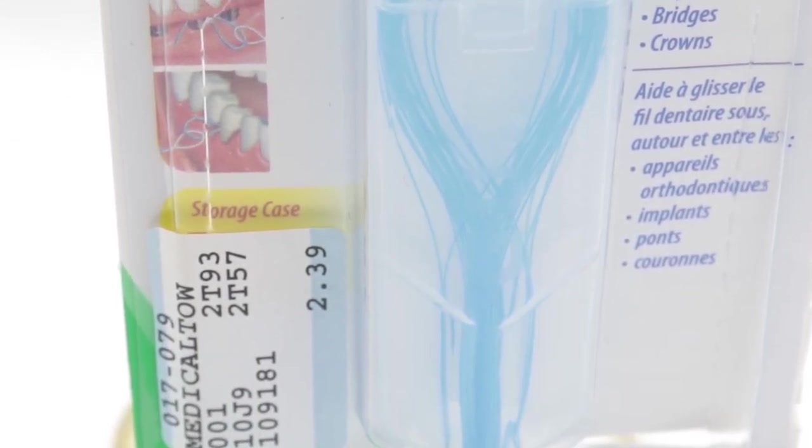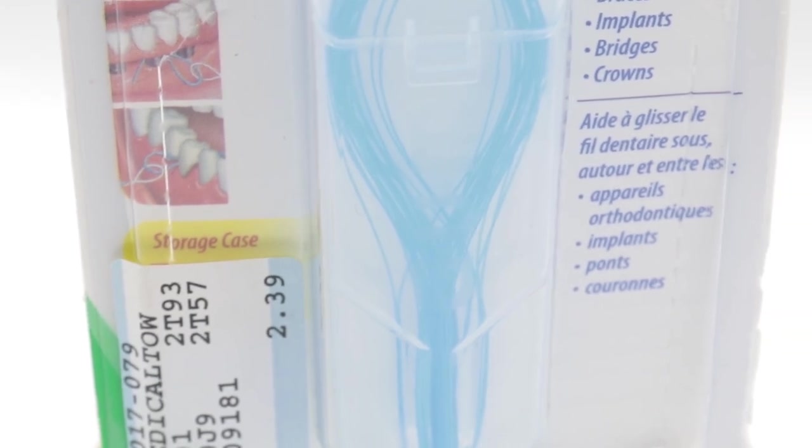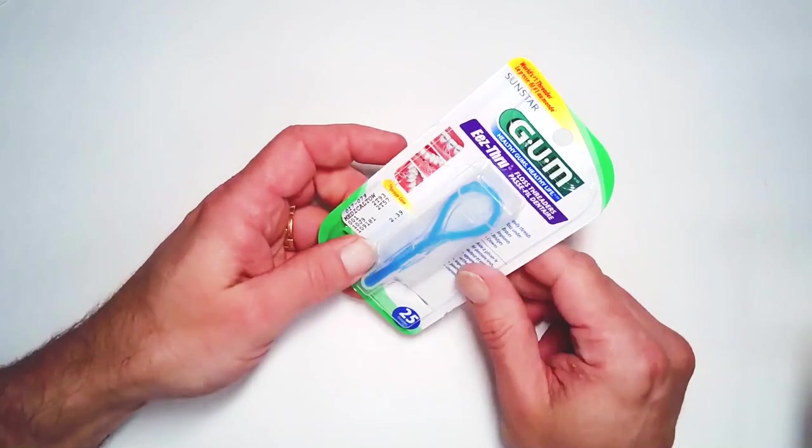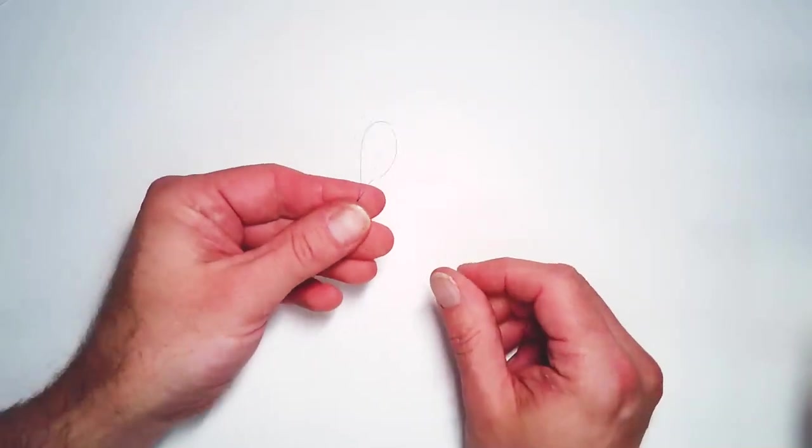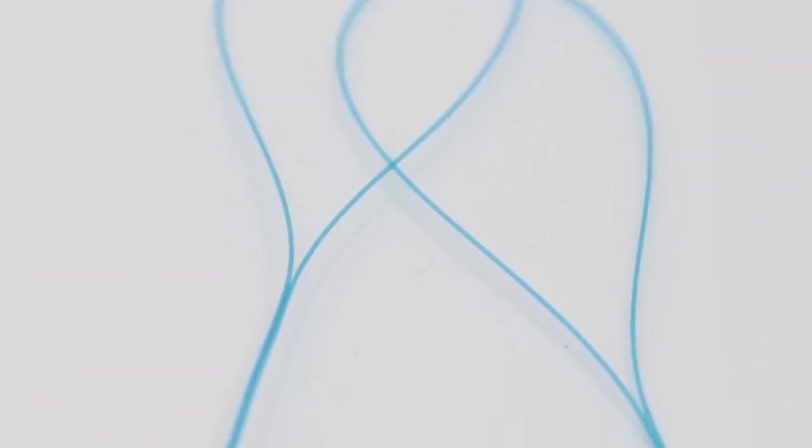It comes 25 to a pack and it costs $2.39. When you take it out, it looks like a little lasso. Let me grab my needle, if the Perfecto needle threader will in fact release it, which it did.